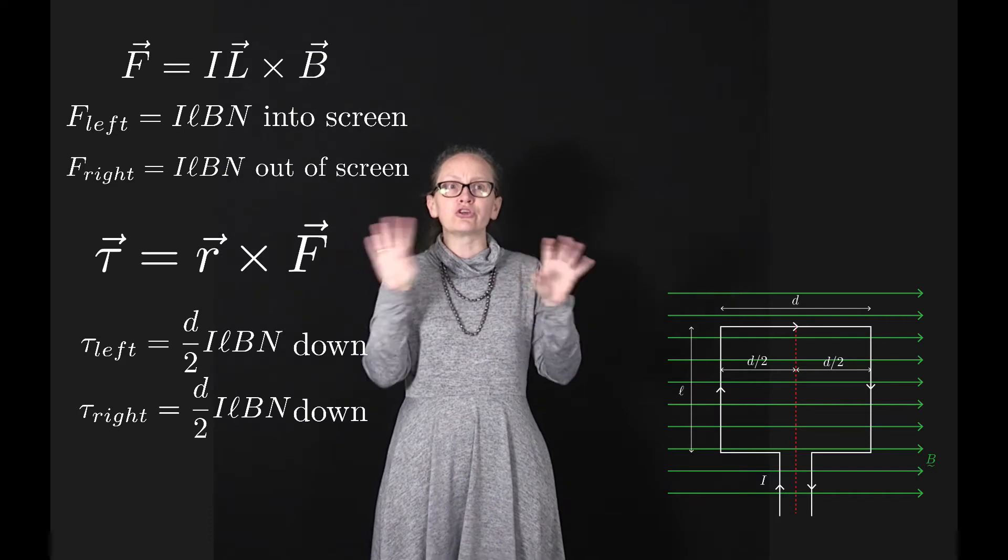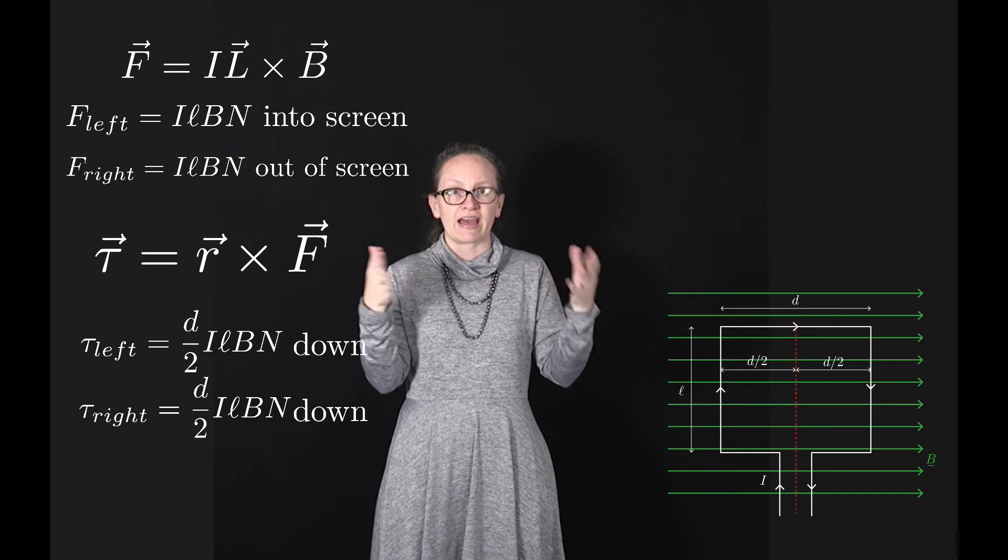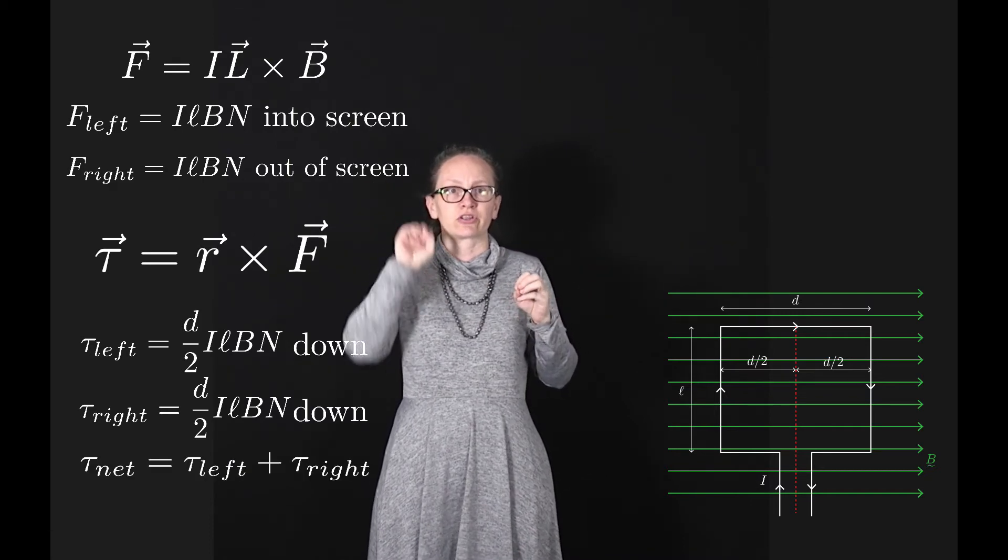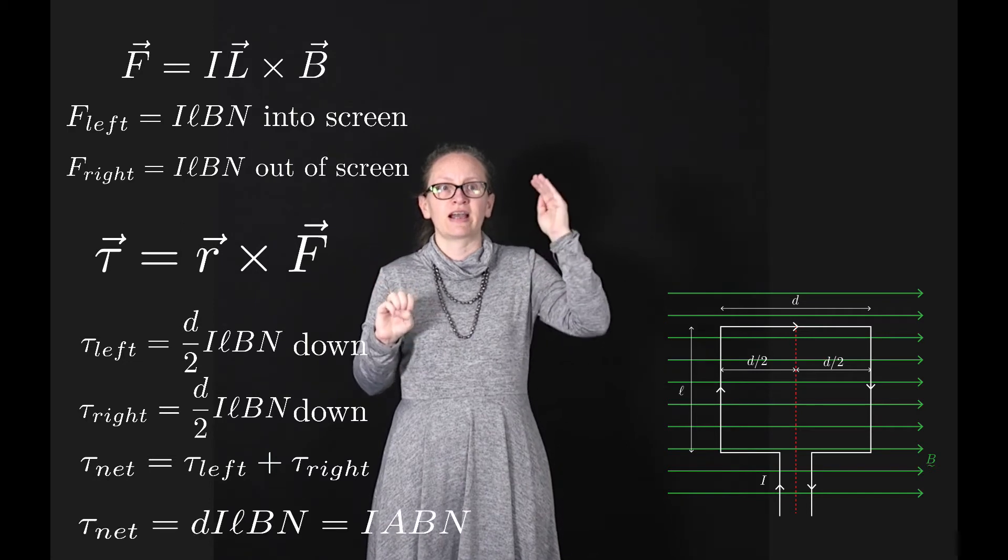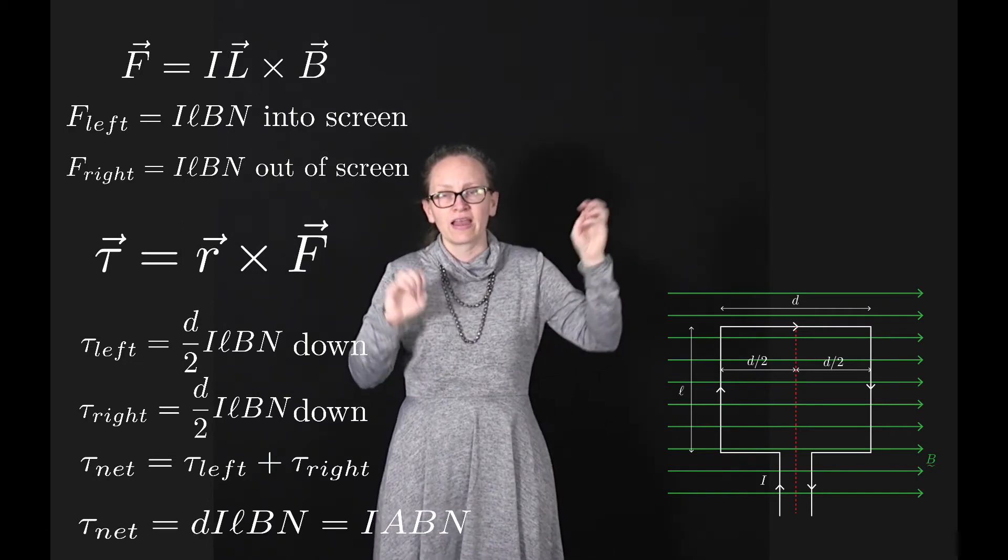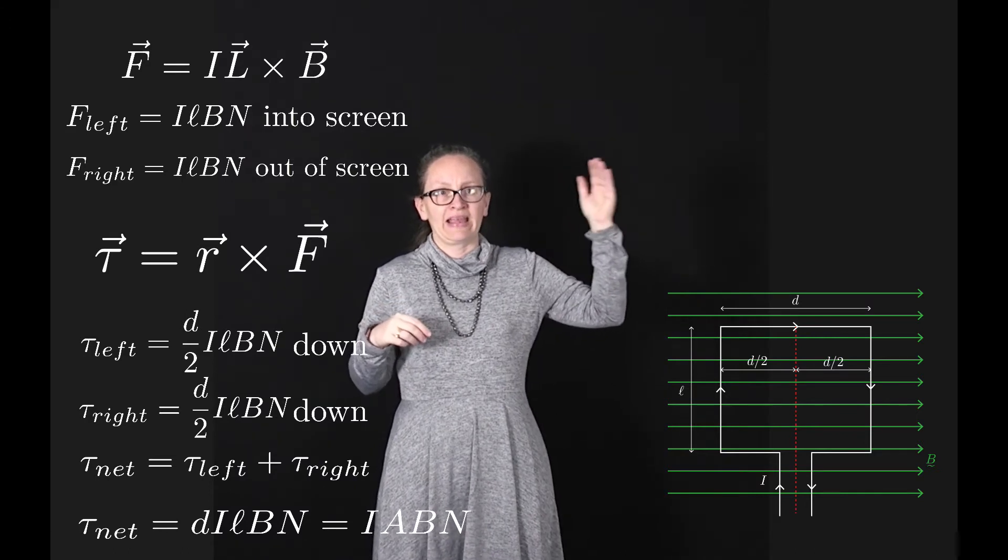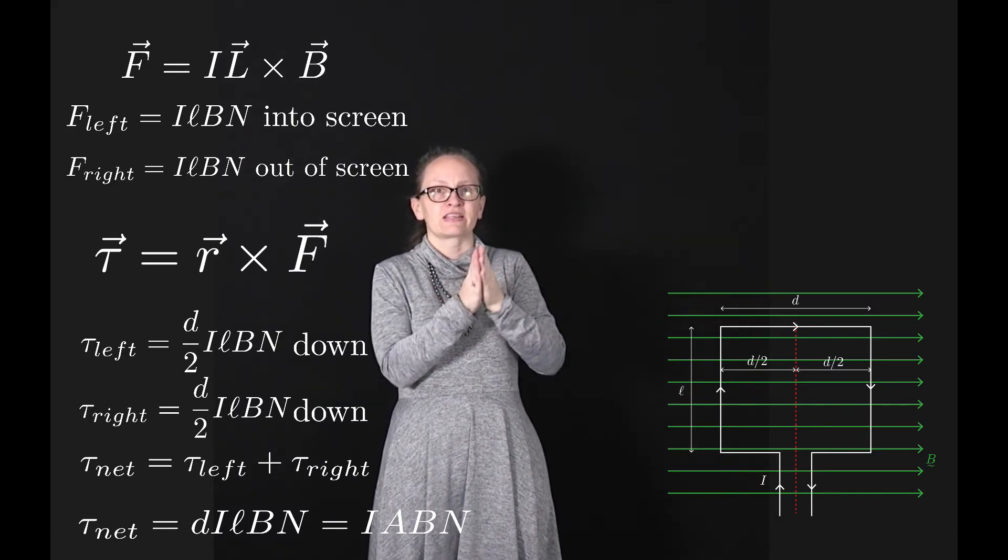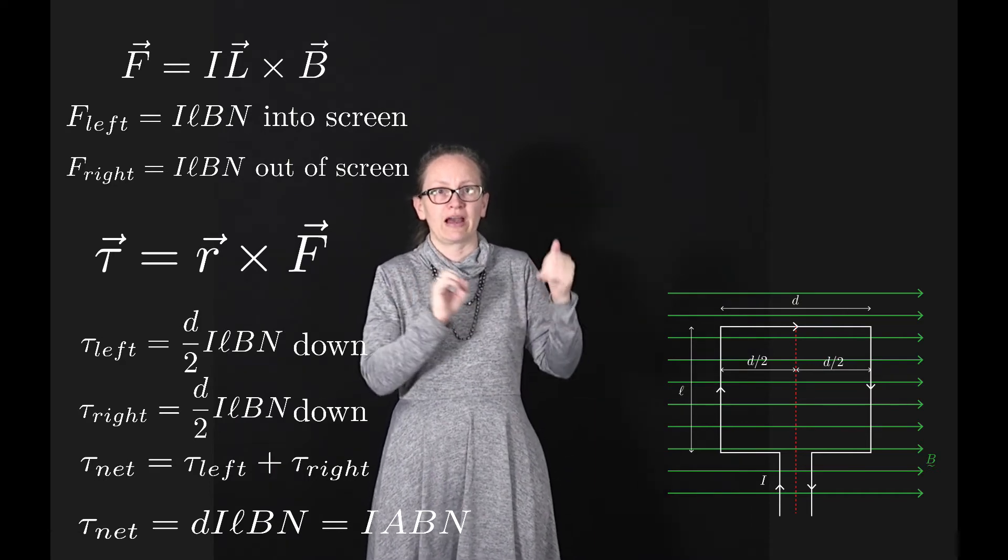These two torques are in the same direction, so the net torque is just their sum: the torque on the left plus the torque on the right, which equals D I L B N, or we can write this as I A B N, where A is the area of the loop equal to L times D.